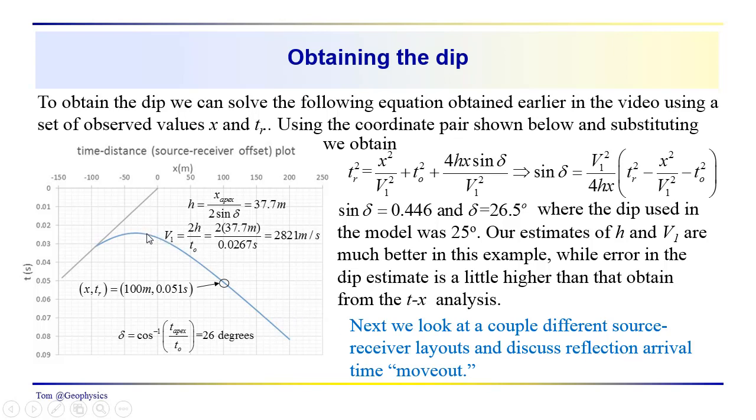We'll discuss this idea of reflection move out, which is the drop in arrival time as we go out to longer offsets. Ideally, we'd like to be able to remove that and see something that looks a little bit more geologic. So we want to remove this move out, and that also takes advantage of some T squared X squared analysis.